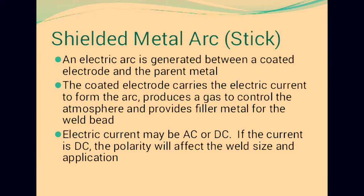In Shielded Metal Arc welding, the coated electrode carries the electric current to form the arc, produces a gas to control the atmosphere, and provides filler for the weld. The electric current may be AC or DC. If DC is used, the polarity will affect the weld size.